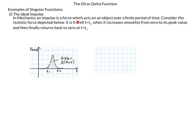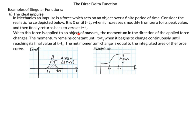In mechanics, an impulse is a force which acts on an object over a finite period of time. The force is zero until around T equals T1, when it increases smoothly from zero to its peak value, then returns to zero at T equals T2. When we apply this force to an object of mass M0, the momentum in the direction of the applied force changes, remaining constant until T1, then changing continuously until it reaches its peak value at T2.